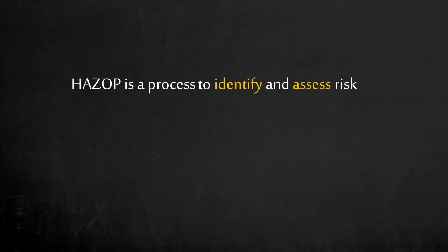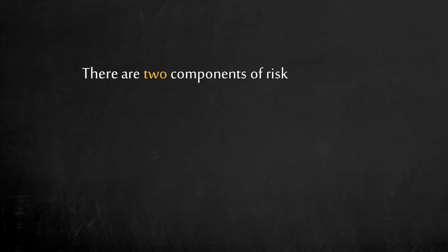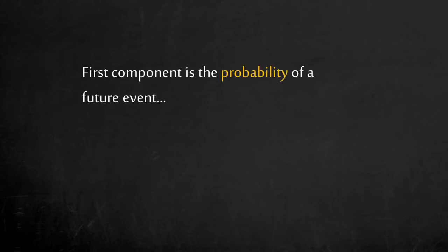Instead of waiting for an accident to happen, a HAZOP can be done to identify and assess hazards. First, we need to understand what risk is. This seems straightforward, but the word 'risk' can actually mean different things to different people. In essence, there are two components of risk. The first component is probability — this expresses the uncertainty of future events. Think of flipping a coin: what is the uncertainty of the outcome before and after the result is revealed?